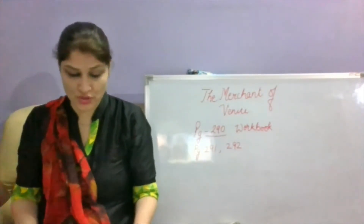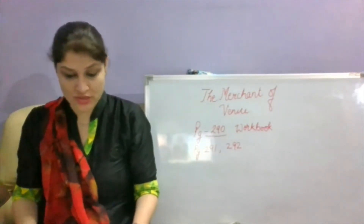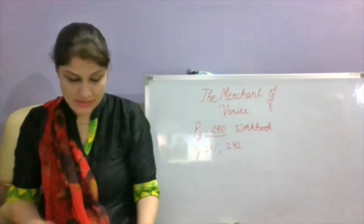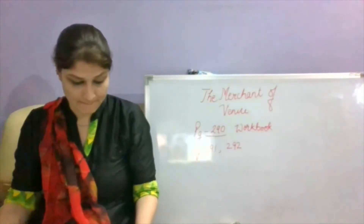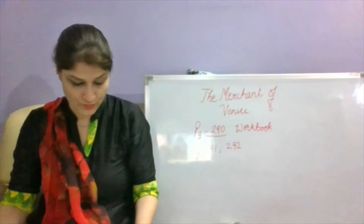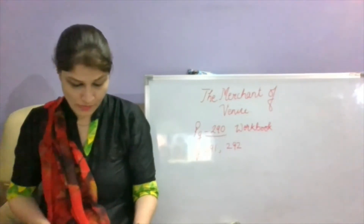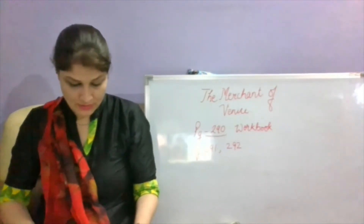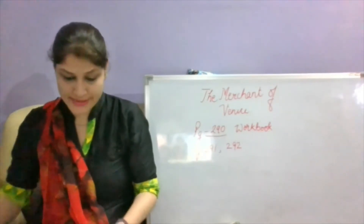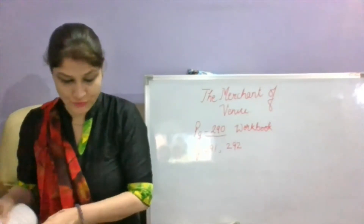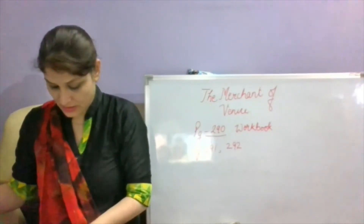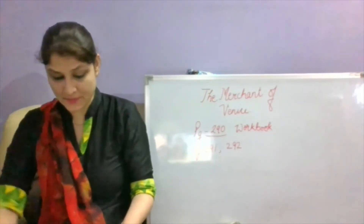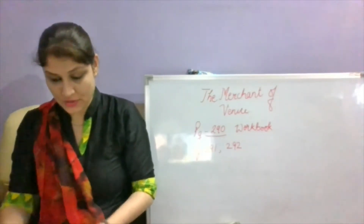I'm sure you remember that Shylock was talking to the Duke in Act 4, Scene 1. This is page number 116 of your book. You can understand it more easily.